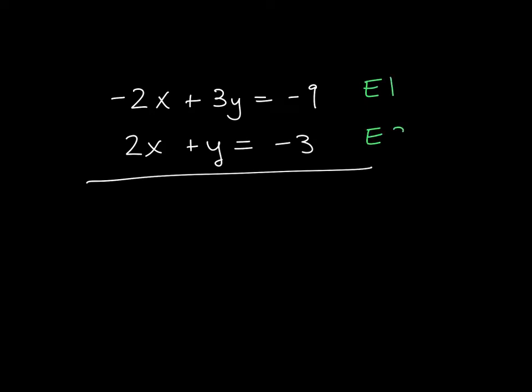Try another one of those. So our next equation is negative 2x plus 3y is equal to negative 1. My other equation is 2x plus y is equal to negative 3. And again, all I'm going to do with these to solve for elimination, I have equation 1 and equation 2, and I'm just adding them together.